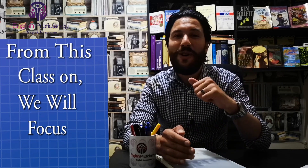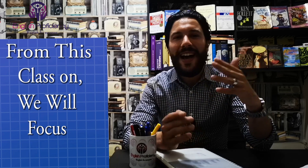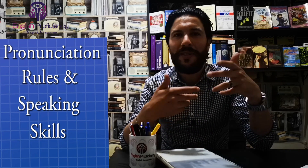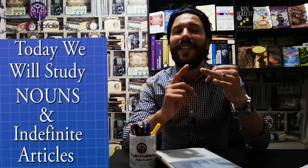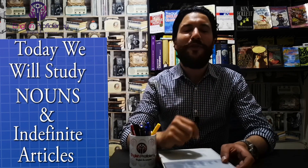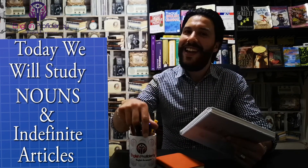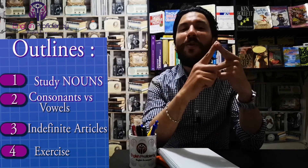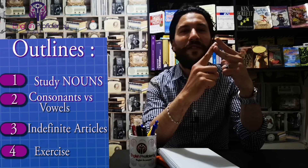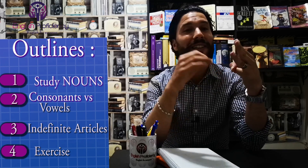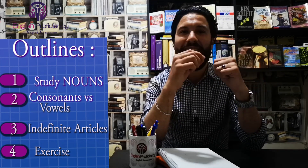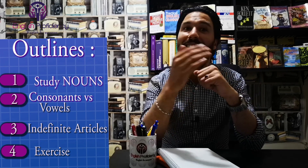This is our third lesson in practice speaking for beginners. From this class on, we will see English in more detail. I don't want to teach you English just by imitation and repetition only — I want you to understand English, use it, and speak it. For this reason, we will study grammar and vocabulary. For today, we're going to see nouns and indefinite articles. Please make sure you have a notebook and a pen. We will also study the difference between vowels and consonants, and at the end we will have an exercise.